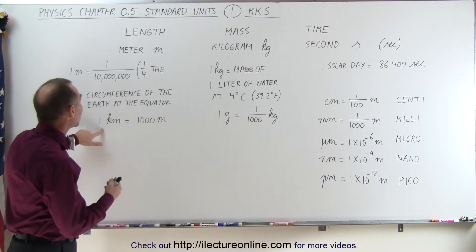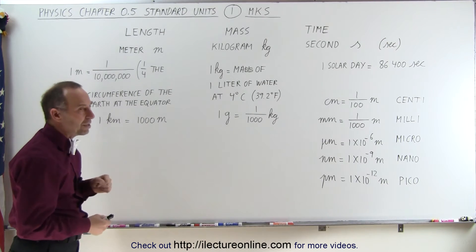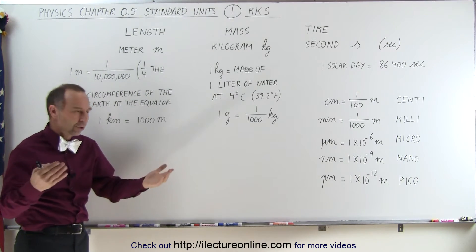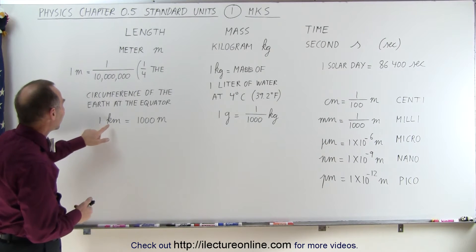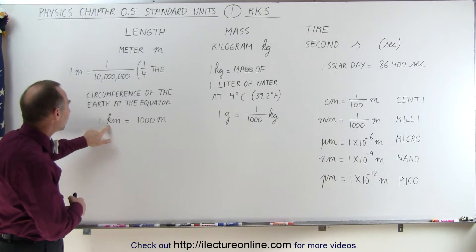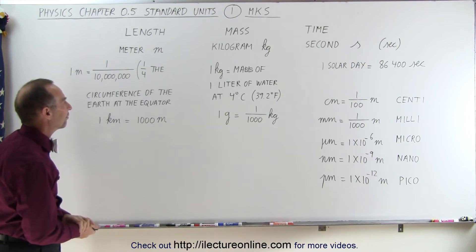Also, what we should realize is that a kilometer is a thousand meters. Of course, a kilometer is used for determining large distances. Kilo means a thousand, so kilo meter means a thousand meters, and that's exactly what it's defined as.